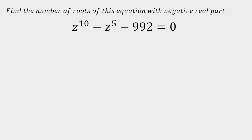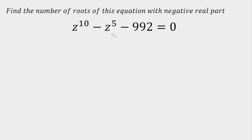You can think of this as a quadratic. If you take z raised to the power 5 as x, then this equation becomes x squared minus x minus 992. So one of the factors will be x minus alpha, the other factor will be x minus beta.